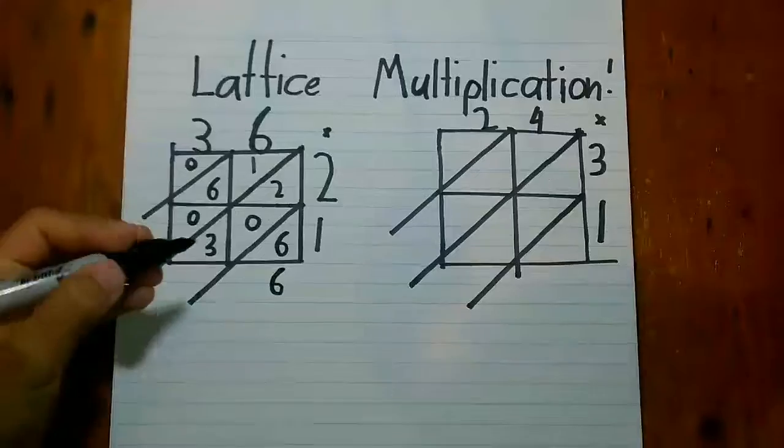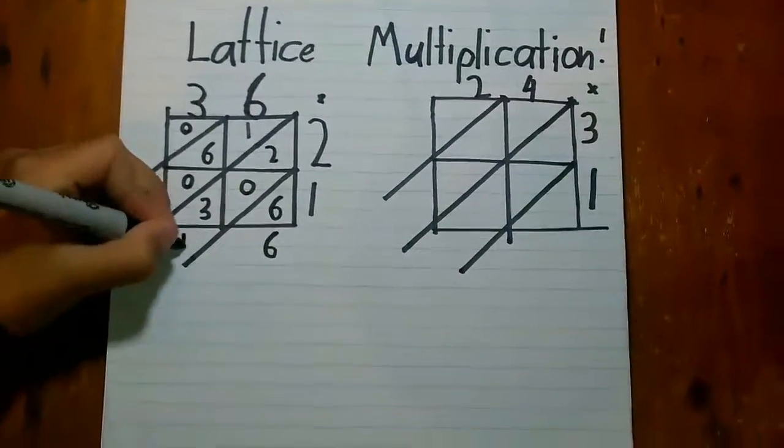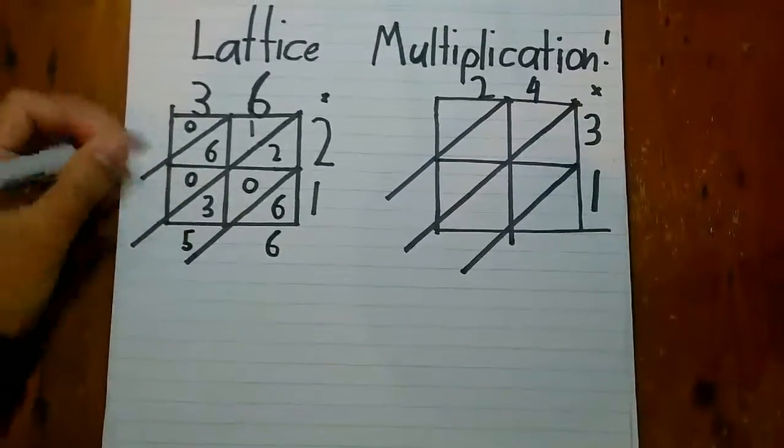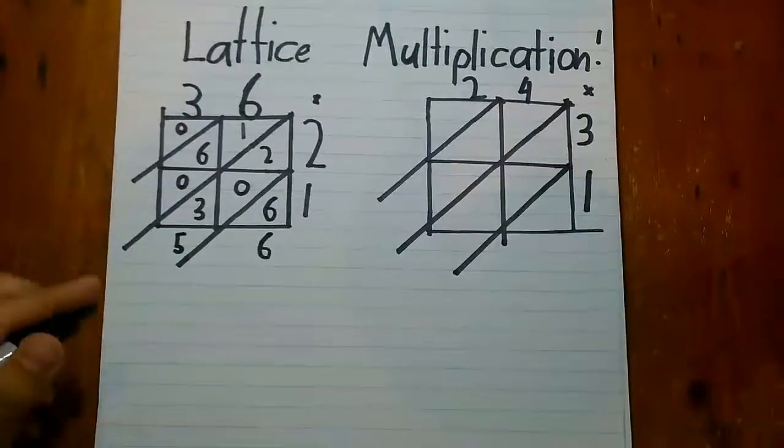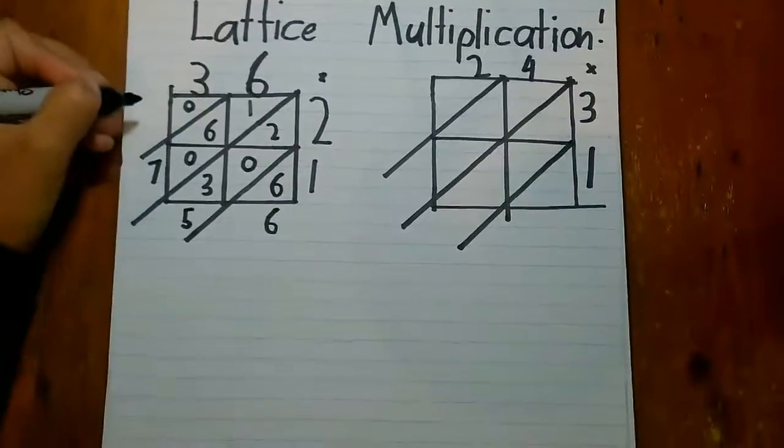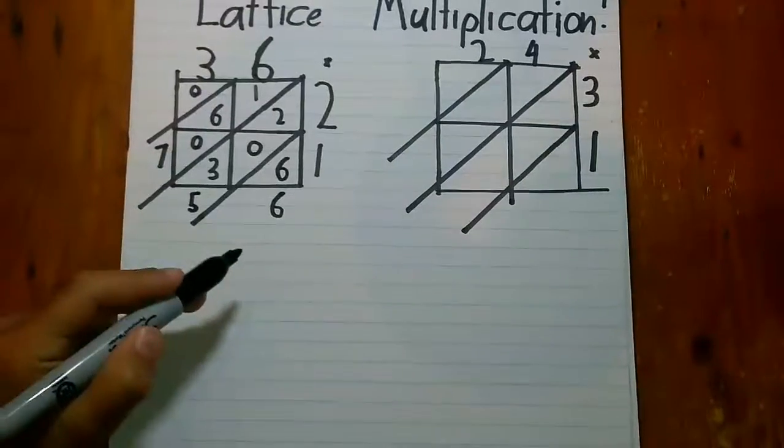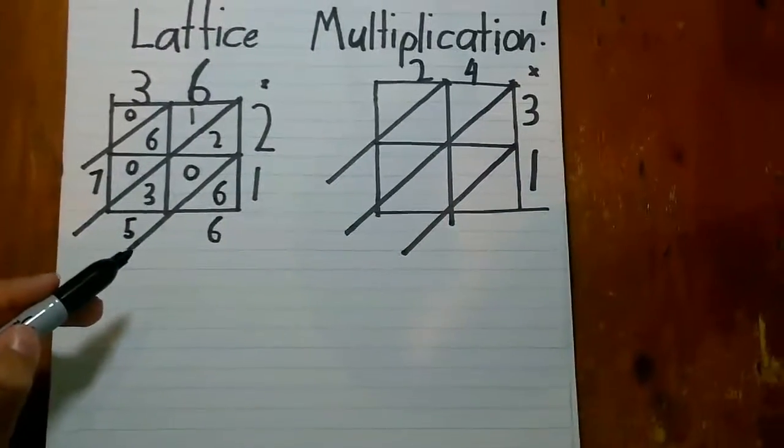And then 2 plus 3 is 5, and 1 plus 6 is 7. And since there's a 0 there, you don't have to put it there. So the answer is 756. Now we'll do the next question.